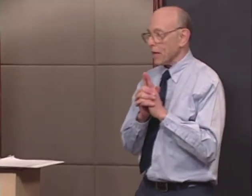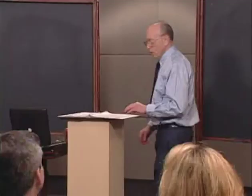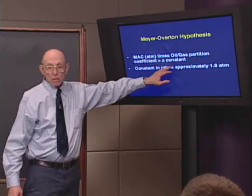Now we go back more than a hundred years to Meyer and Overton. The Meyer-Overton hypothesis: anesthetic potency is directly related to lipophilicity. The more lipophilic a compound, the more potent. There's an equation: if you take an index of potency like MAC and multiply it by an index of lipophilicity, you get a constant — approximately 1.8 atmospheres in rats.